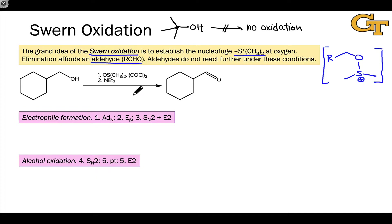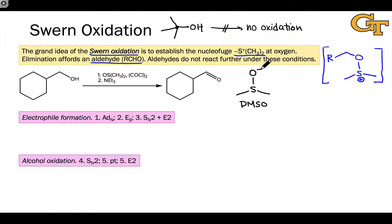Before we dive into the mechanism of the SWERN oxidation, let's look at the reagents involved, since there are some rather exotic-looking molecules. The first is dimethyl sulfoxide — DMSO — containing oxygen and sulfur. A useful resonance structure places negative charge on the oxygen and positive charge on the sulfur. DMSO is on some level an analog of acetone; the S-O bond is similar to the carbonyl group, polarized toward oxygen, and this O⁻ S⁺ resonance structure is useful for understanding how the reaction works.